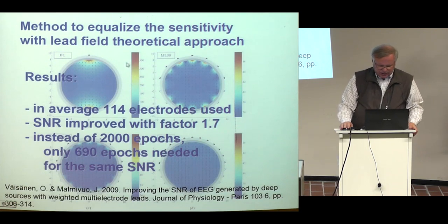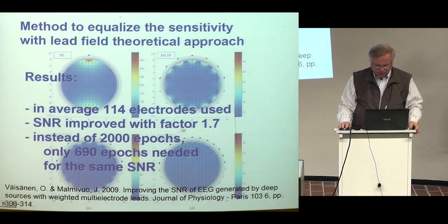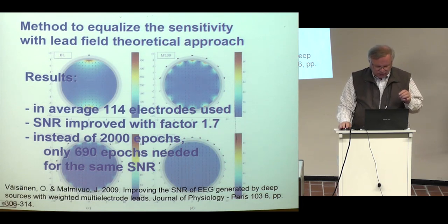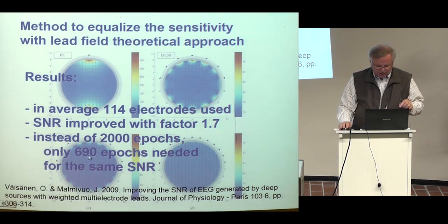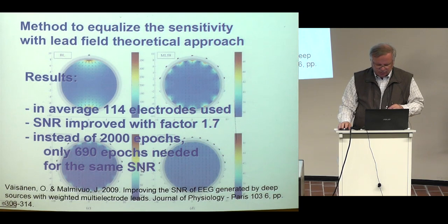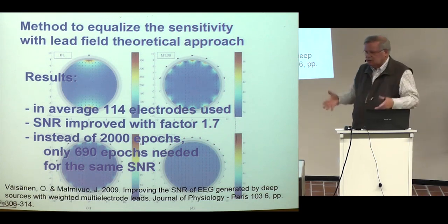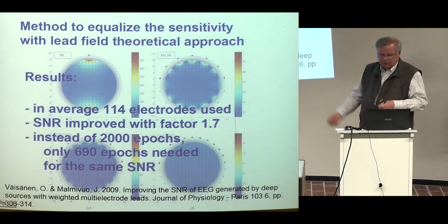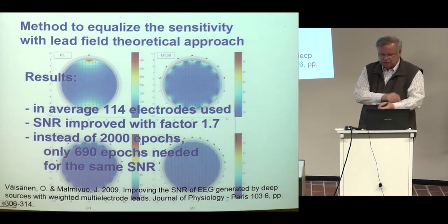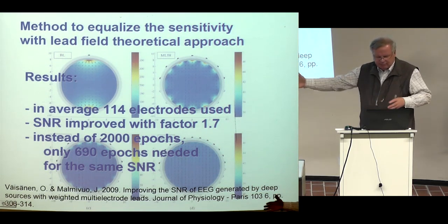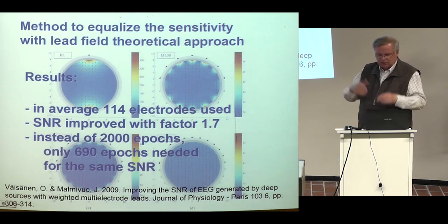We calculated the results: on average with 114 electrodes used, the signal-to-noise ratio improved by a factor of 1.7 — not very much. But instead of 2000 stimulation epochs, only 690 epochs are needed for the same signal-to-noise ratio. This is a remarkable, important improvement when thinking about how unpleasant it is for the patient to sit for all 2000 epochs. That can be reduced to 690 epochs to get the same signal quality.